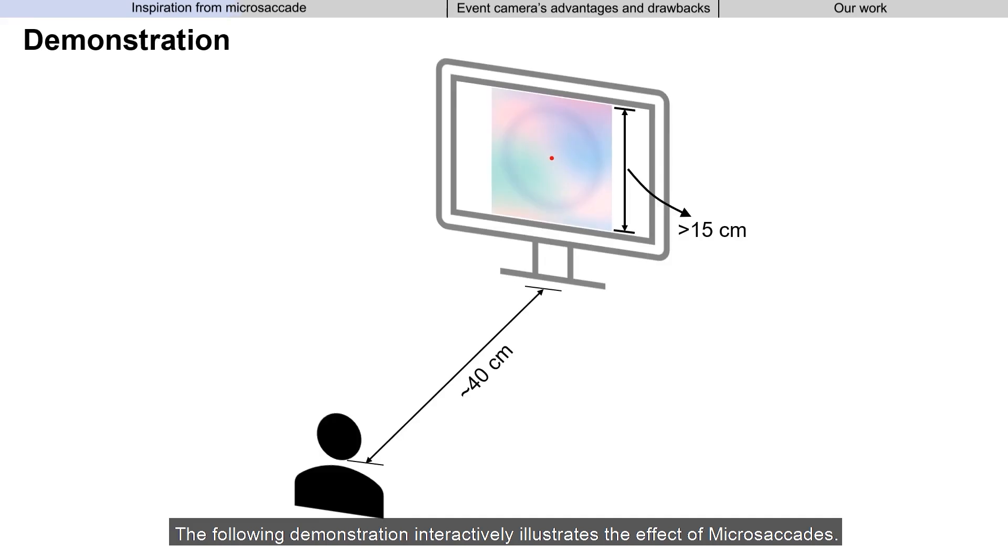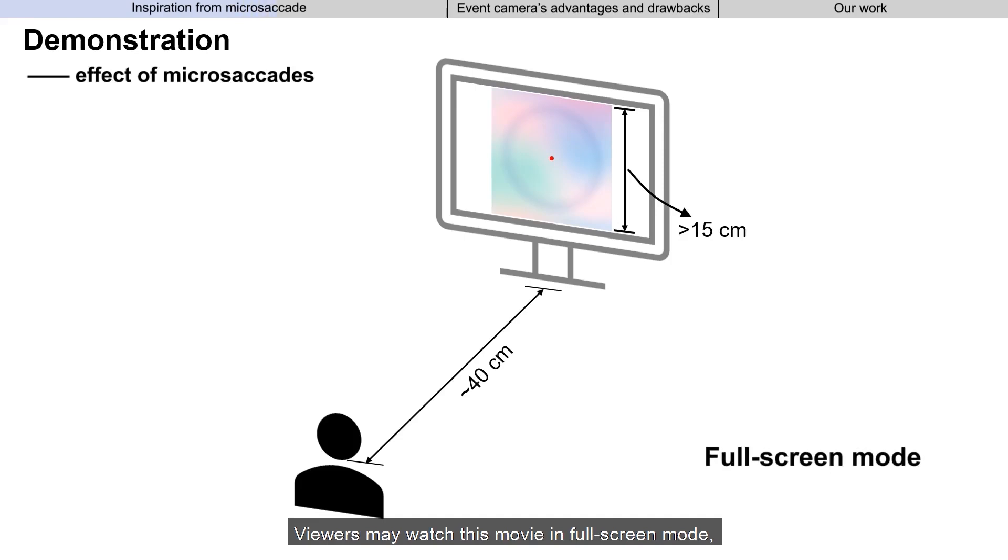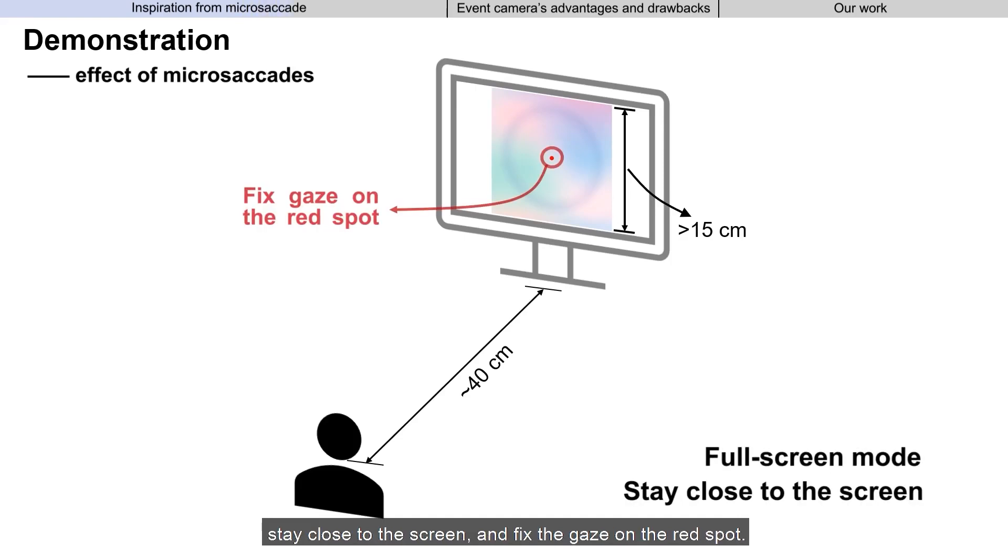The following demonstration interactively illustrates the effect of microsaccades. Viewers may watch this movie in full-screen mode, stay close to the screen, and fix the gaze on the red spot. You can pause the video here to observe.